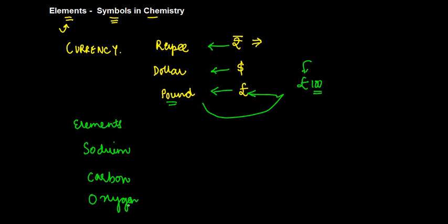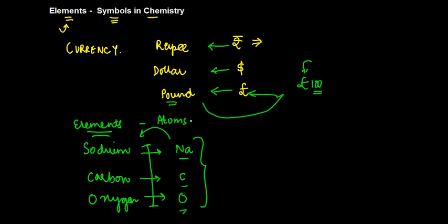So in chemistry also, instead of using these complete names, what we do is we use symbols. So let's say for carbon we use C, for oxygen we use O, and for sodium we use Na. This is what I'm talking about - the modern terminology or the modern symbols which are used to represent various elements. When I say elements, these basically denote the atoms of the element, because we know that all these elements are made up of atoms.